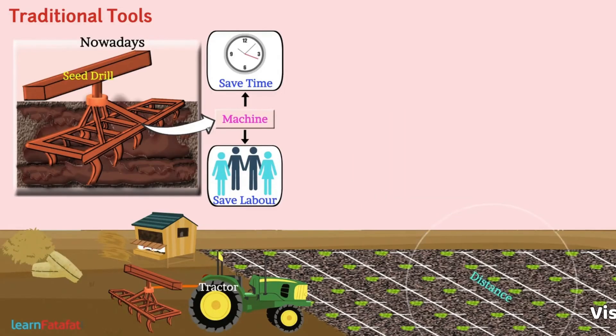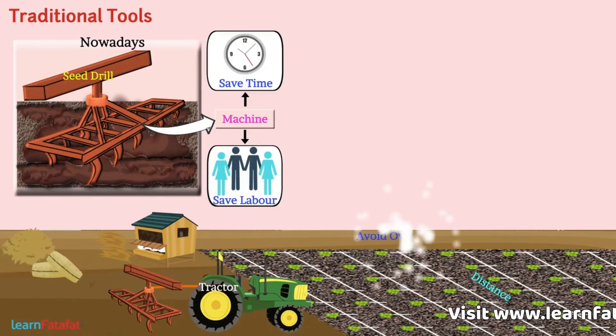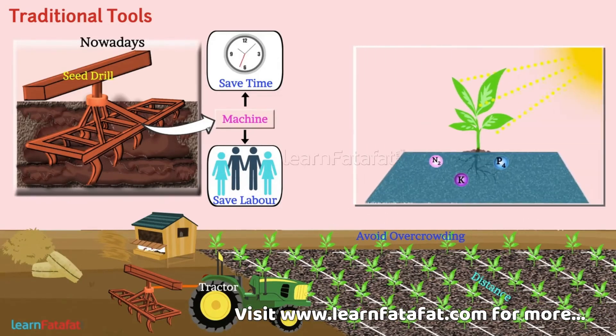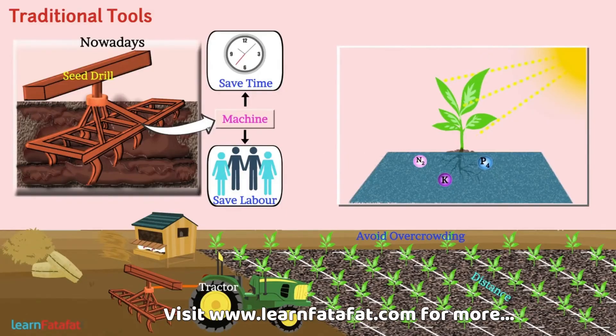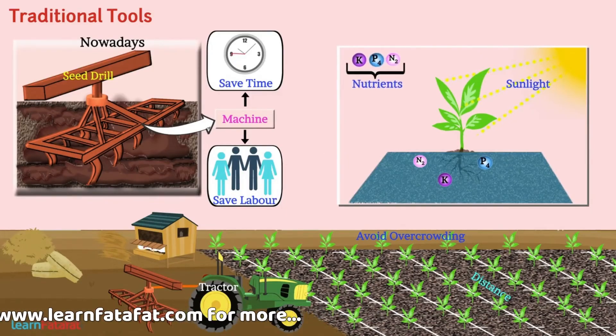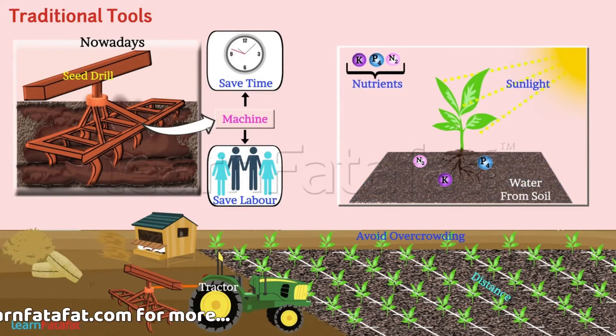Keeping distance between seeds helps to avoid overcrowding of plants, which in turn allows plants to get sufficient sunlight, nutrients, and water from the soil.